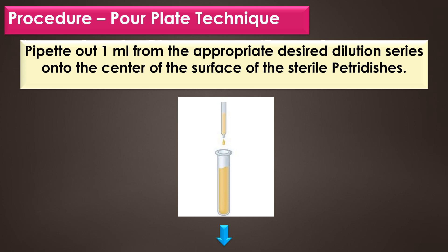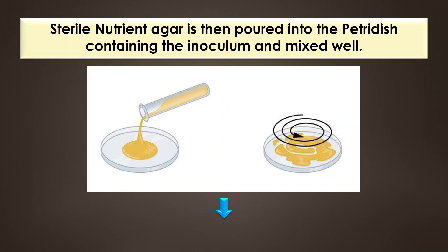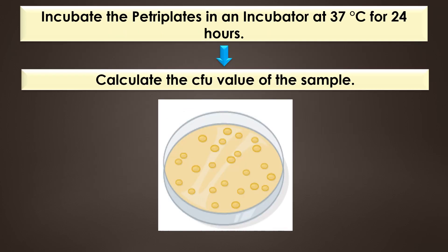The next procedure is the pour plate technique. Pipette 1 ml from the appropriate desired dilution series onto the center of the surface of a sterile petri dish. Pour sterile nutrient agar into the petri dish containing the inoculum and mix well. Incubate the petri plates in an incubator at 37 degrees Celsius for 24 hours.